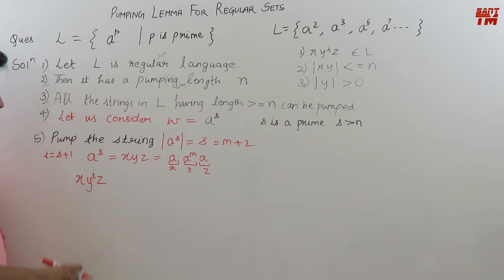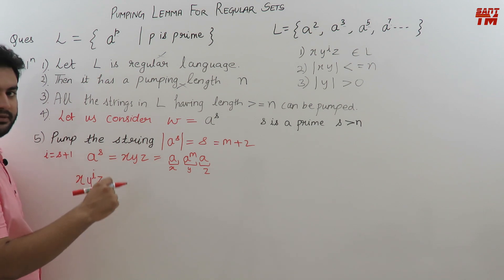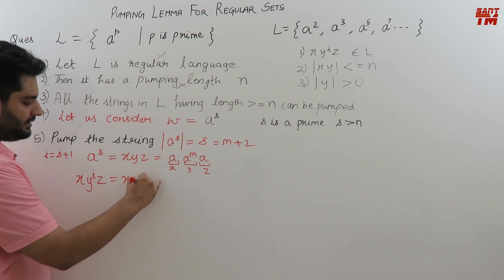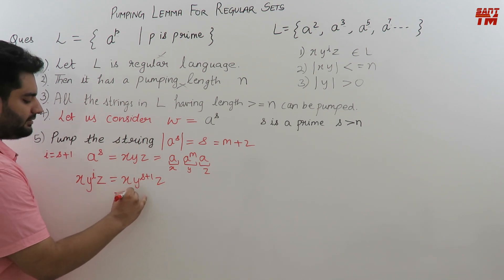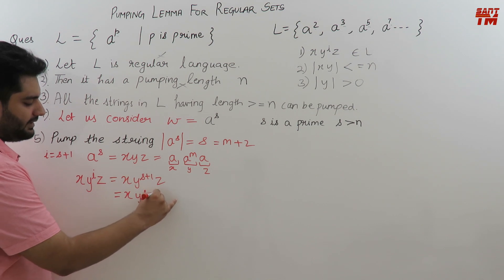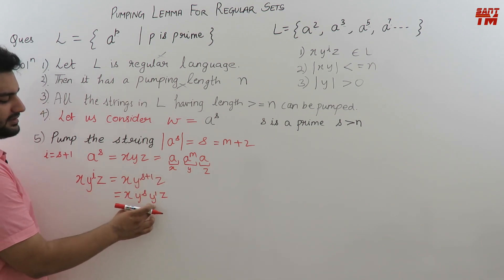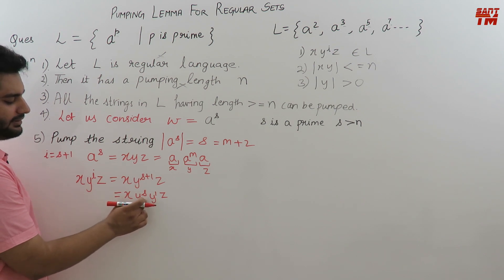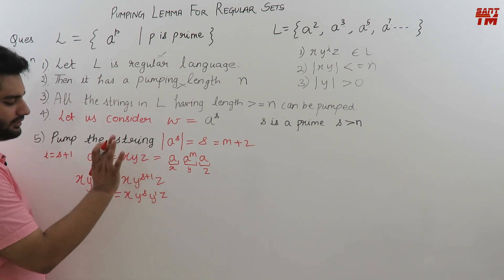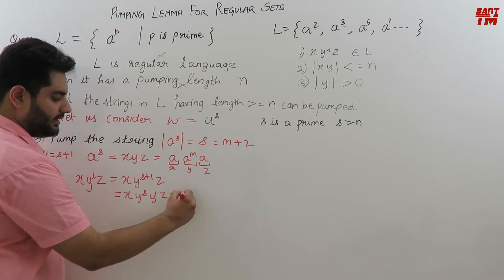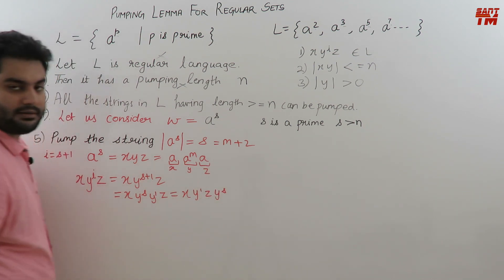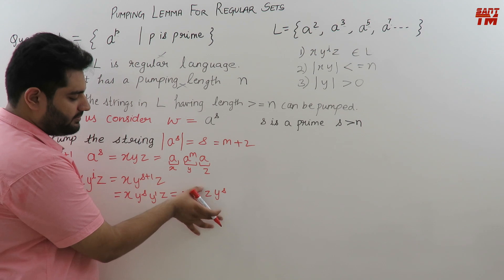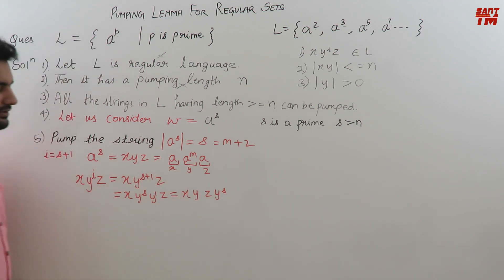With i = S + 1, we get X · Y^(S+1) · Z. Mathematically, Y^(S+1) can be written as Y^S · Y^1, since when bases are the same, powers are added. So we can write the pumped string as X · Y · Z · Y^S, or equivalently X·Y·Z followed by Y raised to the power S. This is the string after pumping.